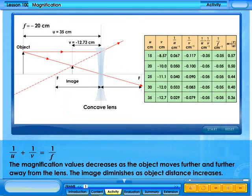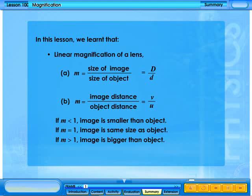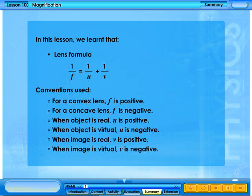In this lesson, we learned that linear magnification of a lens, M, equals the size of image over the size of object, or equivalently, M equals image distance over object distance. If M is less than 1, the image is smaller than the object. If M equals 1, the image is the same size as the object. If M is greater than 1, the image is bigger than the object. The lens formula is 1 over f equals 1 over u plus 1 over v.